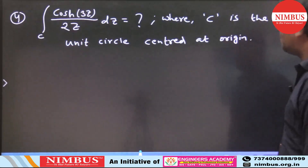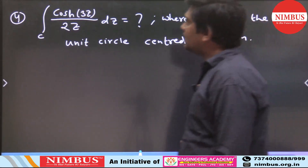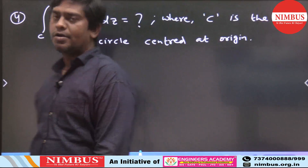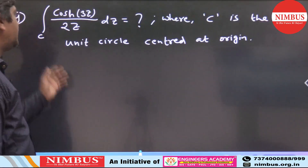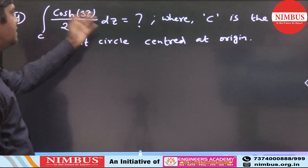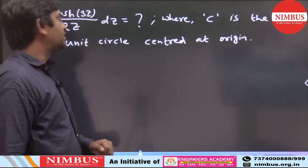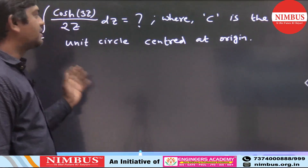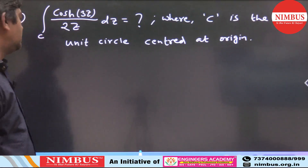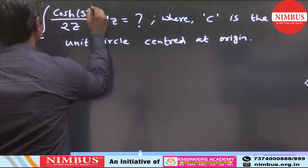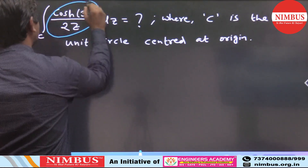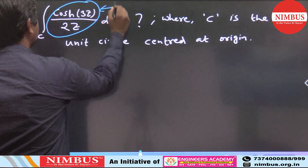Question number 4. The integration given is of cosh(3z) / (2z) dz, where C is the unit circle centered at the origin. Consider this entire function as f(z). This is our f(z).